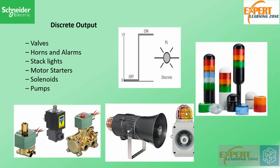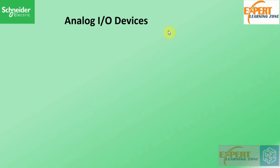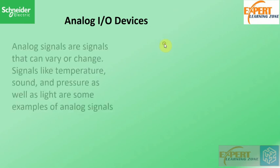Some unique applications of discrete outputs include on and off triggering of circuit breakers, running and stopping of generators, opening and shutting down of water valves, turning on and off of alarm lights, starting and stopping of motors, and many others. Now let's jump into analog I/O devices.